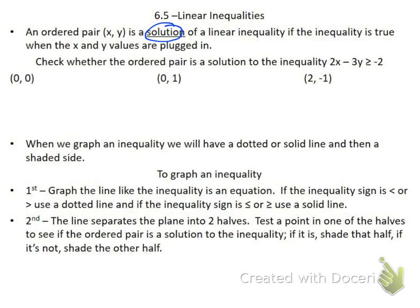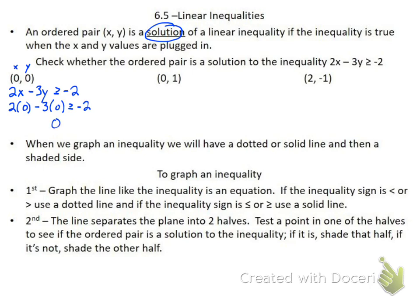With the first ordered pair on the left-hand side, I'm going to plug in — this is my x and this is my y — so I'm plugging in a 0 for x and a 0 for y into 2x minus 3y is greater than or equal to negative 2. So 2 times 0 minus 3 times 0 is greater than or equal to negative 2. That gives me 0 is greater than or equal to negative 2. Is the alligator eating the bigger number? Yes, so it is a true statement, and I know that this one is going to be a solution.